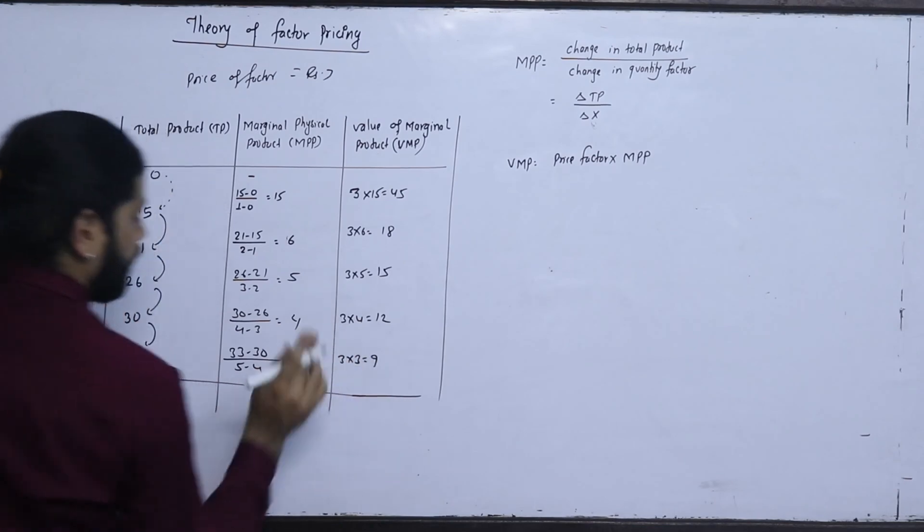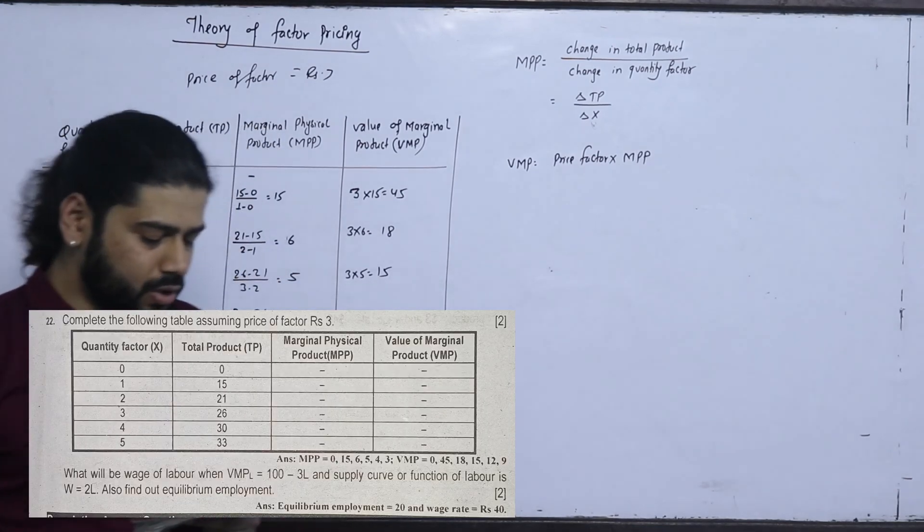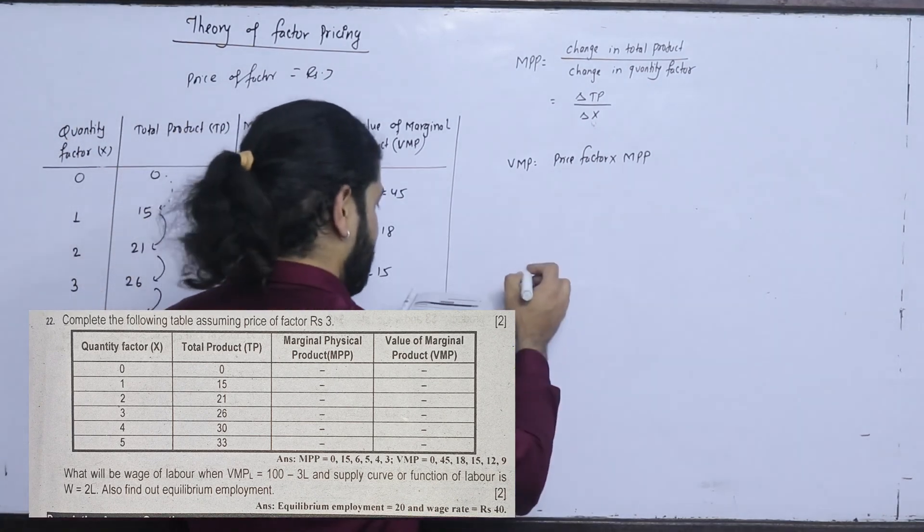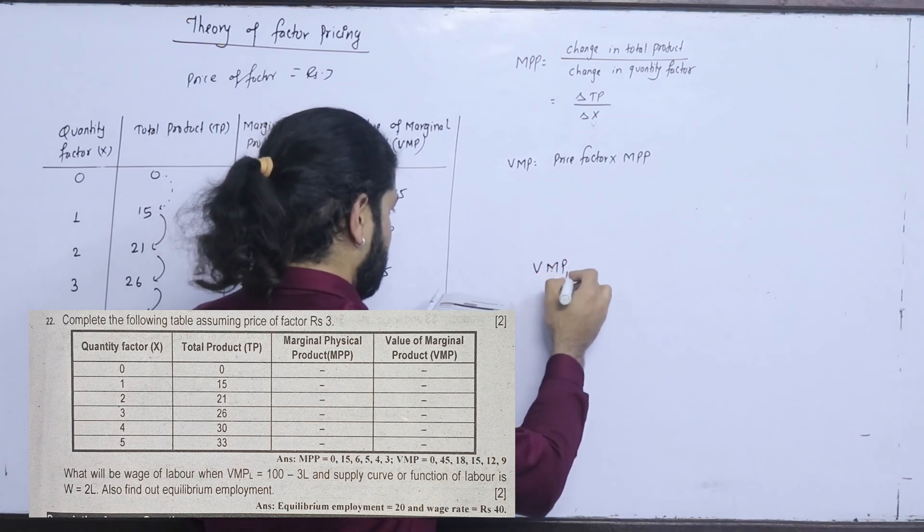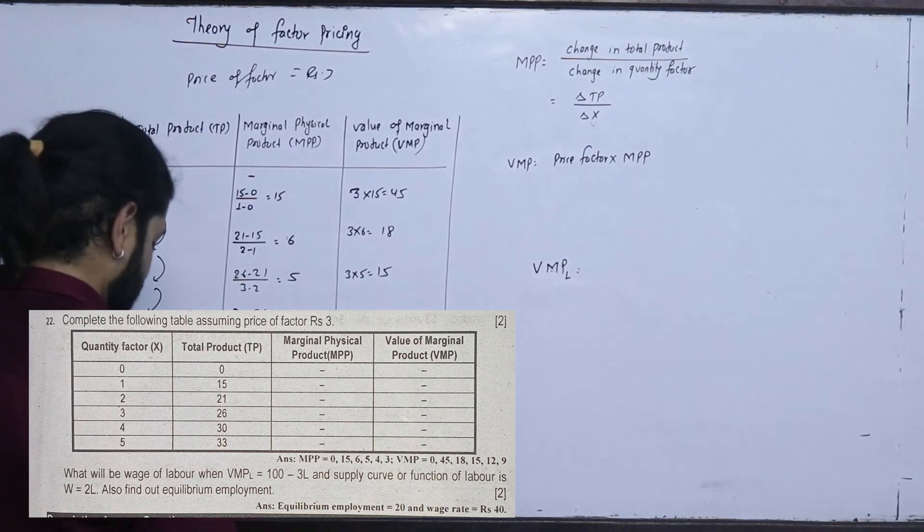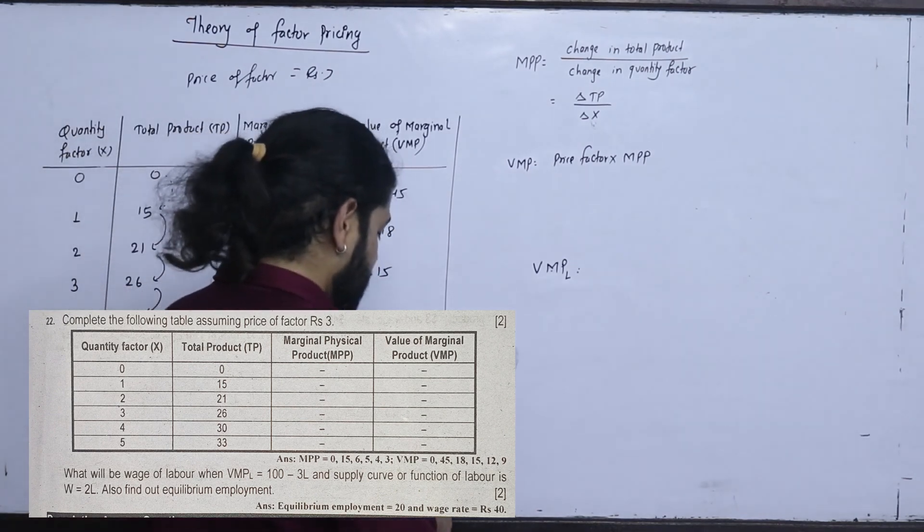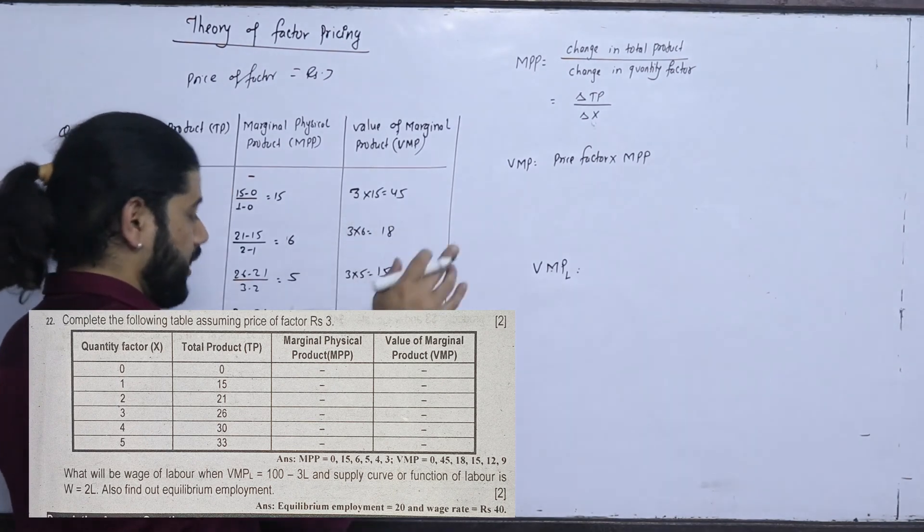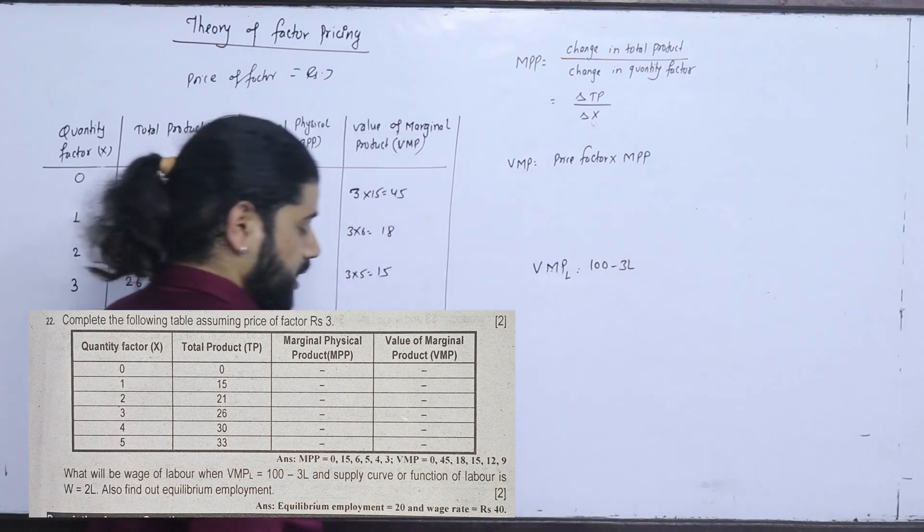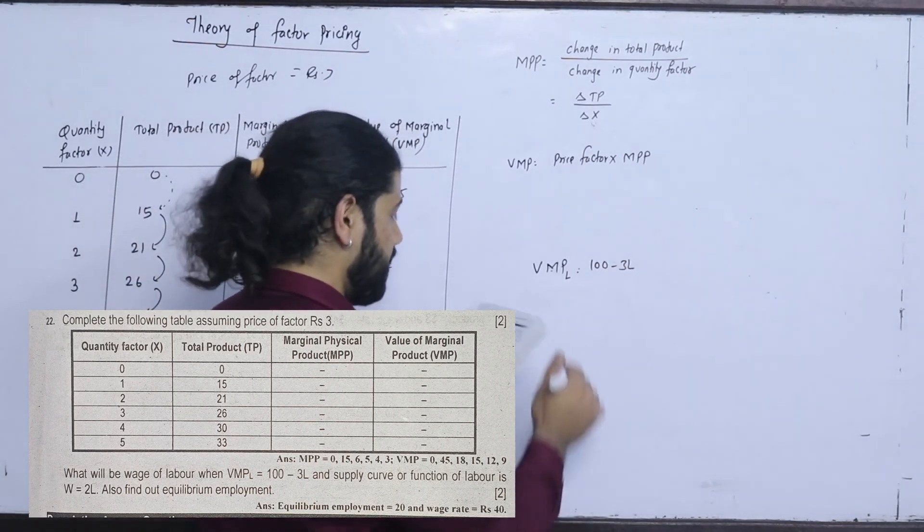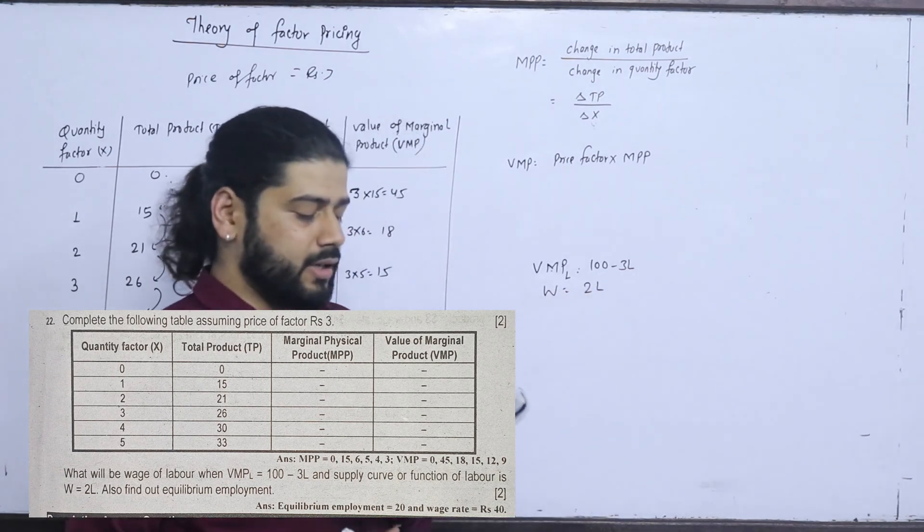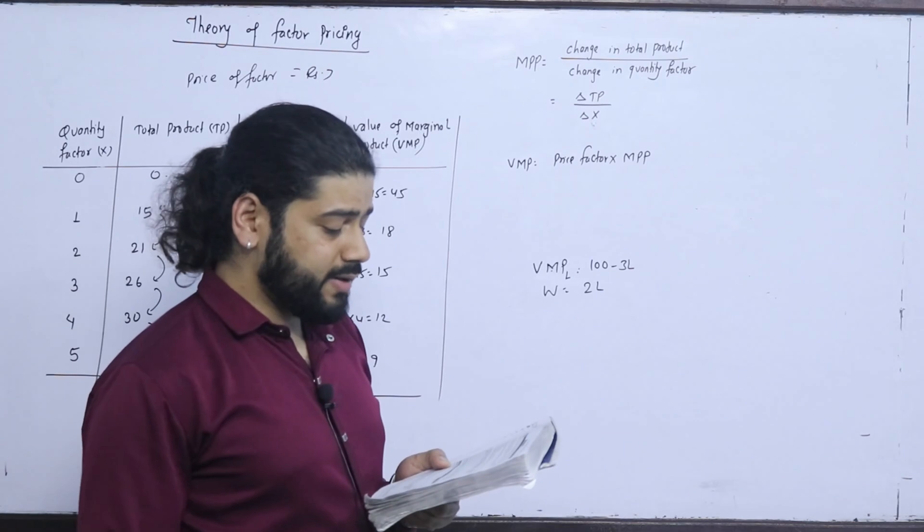What will be the wage of labour when? This is the value of marginal physical product. This is the value of marginal product. 100 minus 3L. And supply curve or function of labour, 2L. Find out equilibrium employment. What will be the wage of labour? Equilibrium condition at equilibrium.